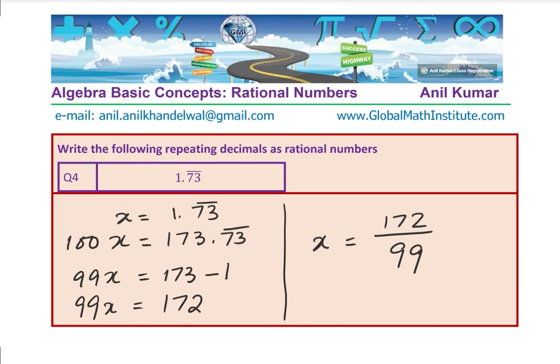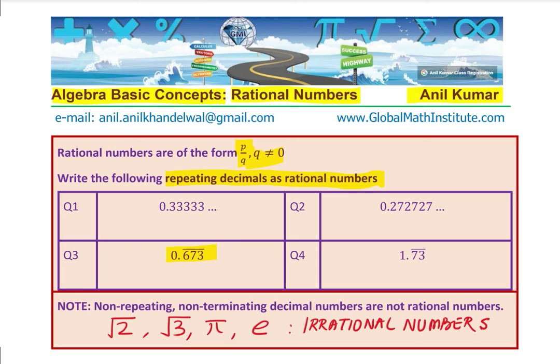Do you see that? When we subtract here, 100x minus x is 99, but 173 minus 1 is 172. The numbers after the decimal do get cancelled, and we get our result. The last question for you to try is question 4b. If x equals 3.2424 repeating, how can you write this as a rational number? You should simplify the end result because rational numbers do not have common factors in numerator and denominator.